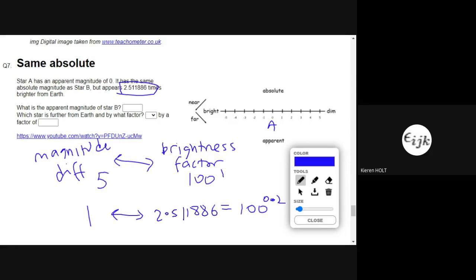difference is only one. Is it a plus one or a minus one? Well, A is brighter than B and therefore will be more negative, so B would be one.